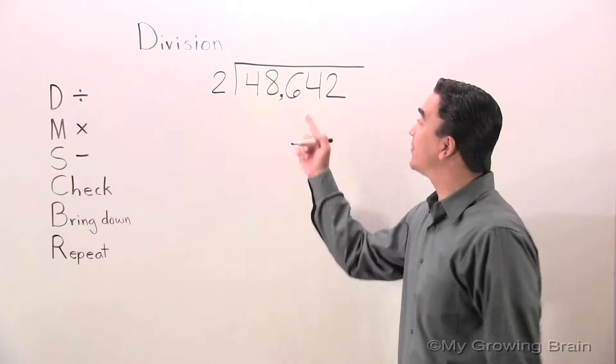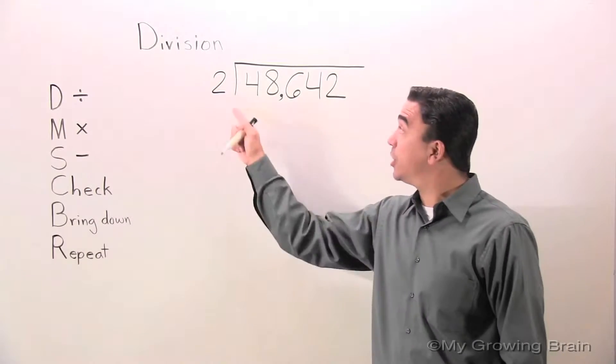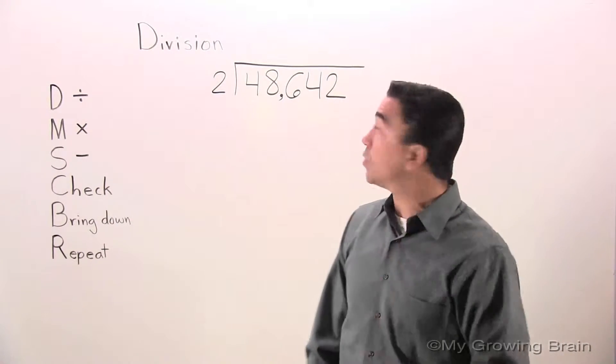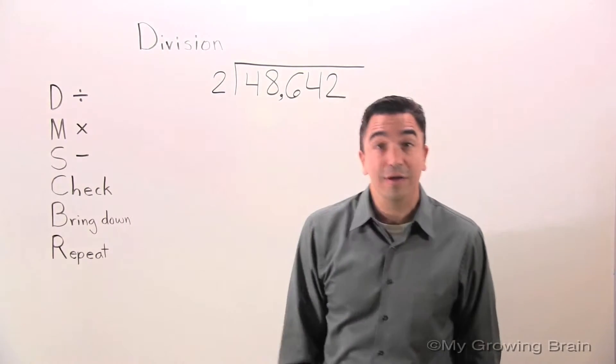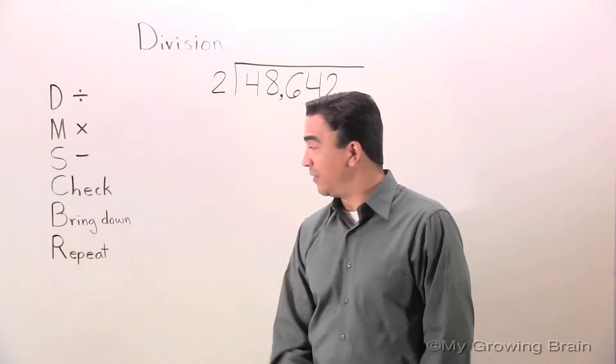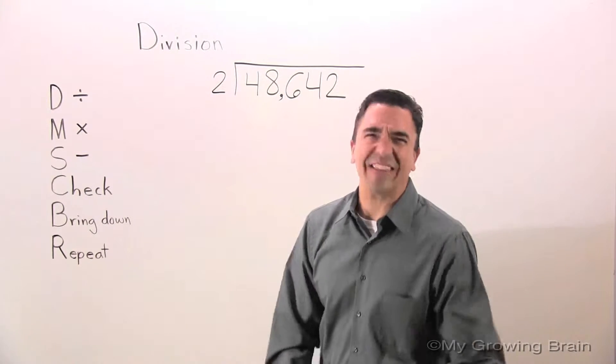48,642 divided by 2. Before we get started, I want to remind you: DMSCBR - Divide, Multiply, Subtract, Check, Bring down, Repeat.